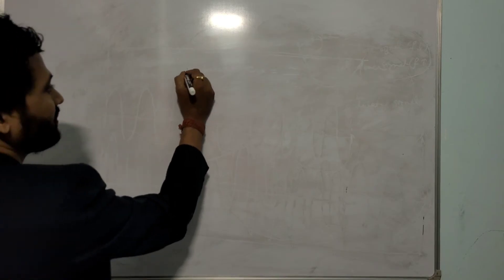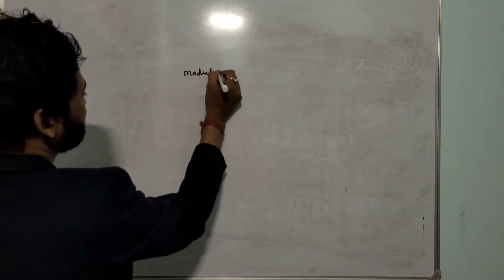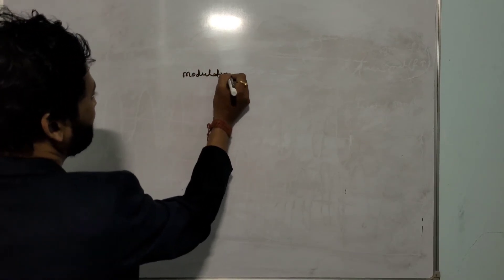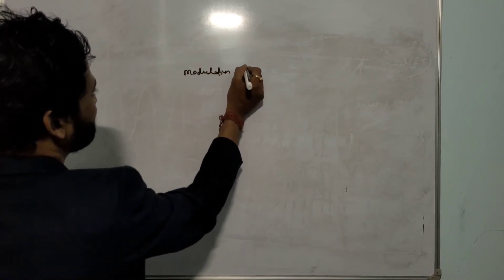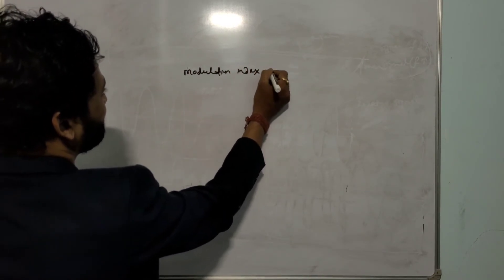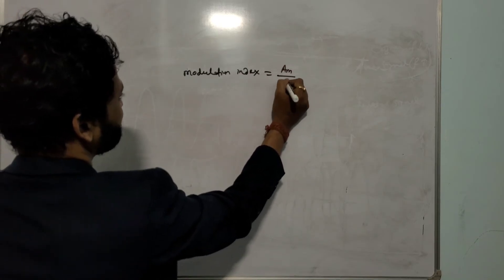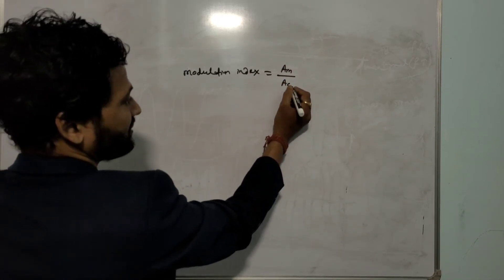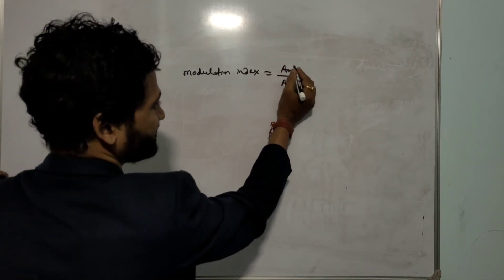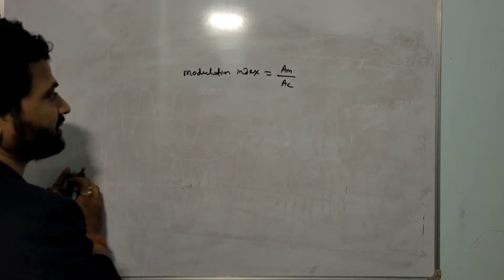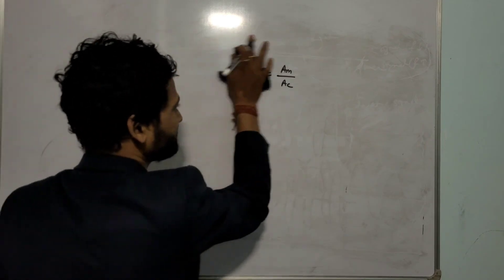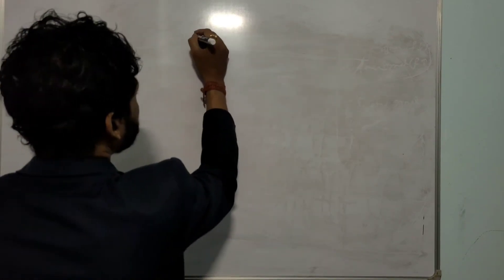That is the concept of amplitude modulation. What is the modulation index of amplitude modulation? That is AM divided by AC — the amplitude of the message signal divided by the amplitude of the carrier signal.